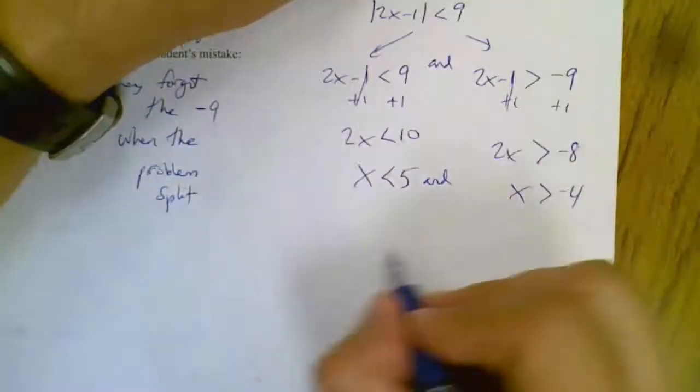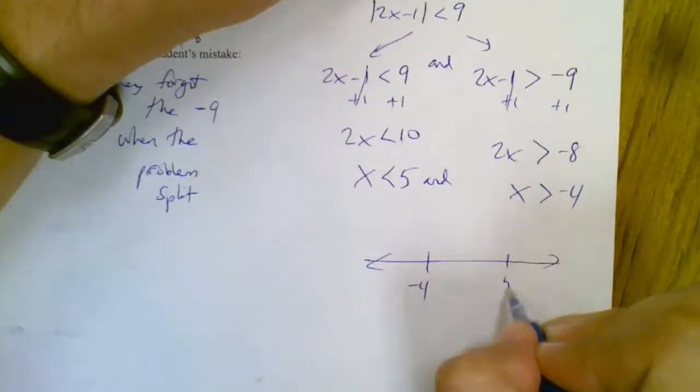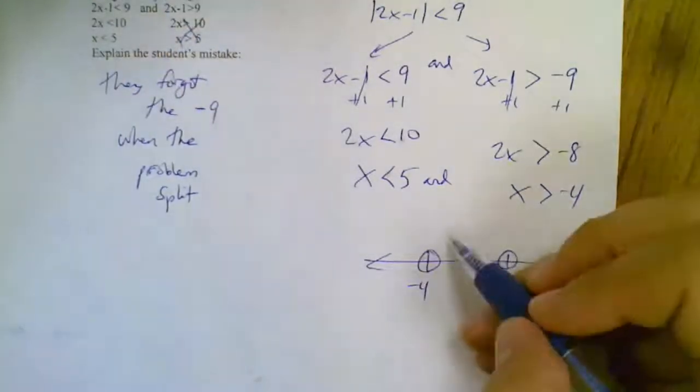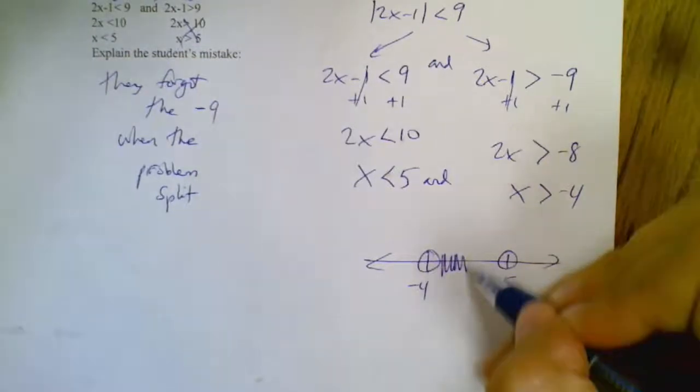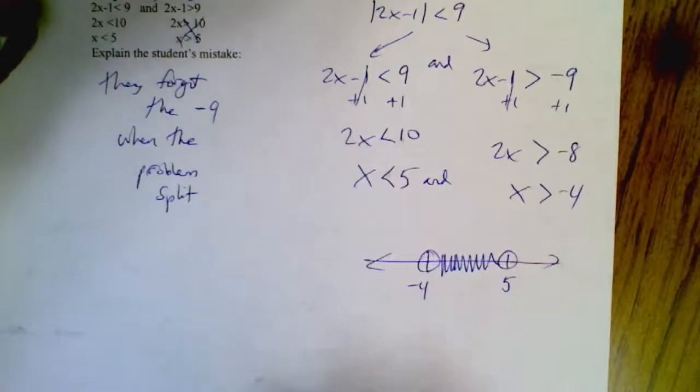I didn't have to flip my symbol because I was dividing by a positive 2. Then I can graph that. I know it's going between a negative 4 and a 5, open, open, and shade between them because it's bigger than that, smaller than that. Or do you just remember ands look like that.